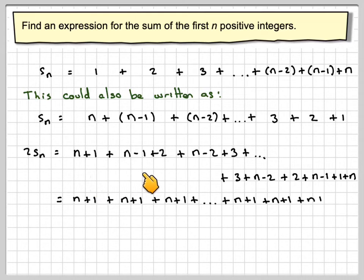Each of these will give me n plus 1. n minus 1 plus 2 gives me n plus 1, n minus 2 plus 3 gives me n plus 1, and so on here.